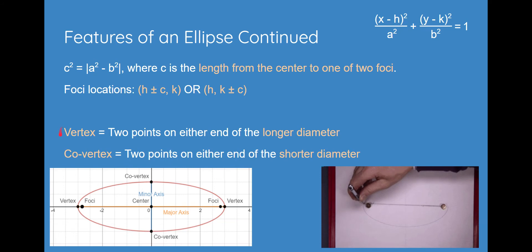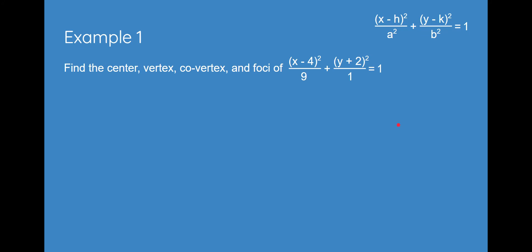And two more terms you would want to know are vertex and co-vertex. Basically, vertex is two points on either end of the longer diameter, co-vertex is two points on either end of the shorter diameter. Here's example one. Feel free to pause the video right now and try it on your own.